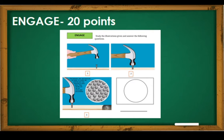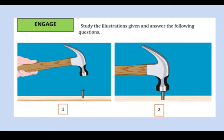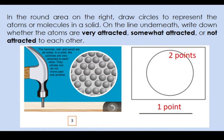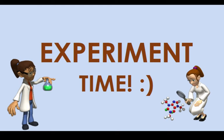In the next activity, you have to study the illustrations given and answer the questions that follow. We have here illustrations 1, 2, and 3, which shows a hammered nail. The hammered nail and wood are all solids. In a solid, the particles are very attracted to each other. They vibrate but do not move past one another. Now, in the round area on the right, you have to draw a circle to represent the atoms or molecules in a solid. On the line underneath, write down whether atoms are very attracted, somewhat attracted, or not attracted to each other.